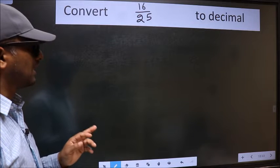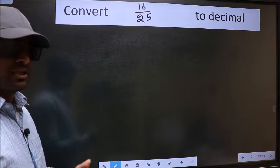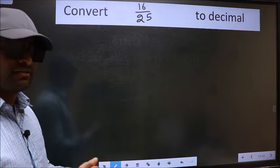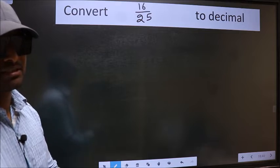Convert 16 by 25 to decimal. To convert to decimal, we should divide it. And to divide, we should frame it in this way.